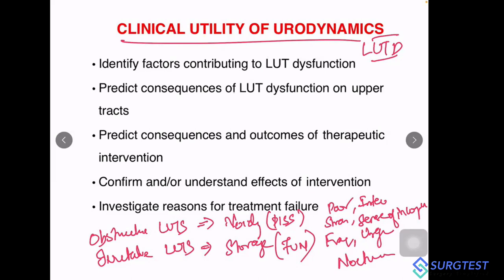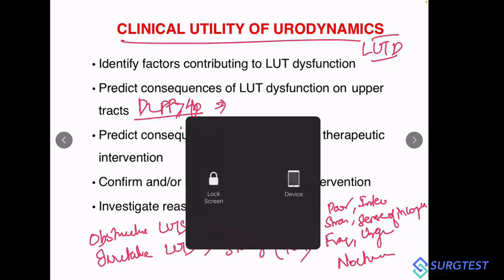Whereas if you have mixed symptoms — both irritative and obstructive — and on examination you cannot find an enlarged prostate, and you have doubts about the diagnosis, there is a clear indication for urodynamic evaluation. The next utility is to predict the consequences of lower urinary tract dysfunction on upper tracts — to find whether the upper tracts are already involved or if there is hydronephrosis. We must find certain parameters, notably DLPP — detrusor leak point pressure. If DLPP is greater than 40 cm of water, it is detrimental to the upper tract.